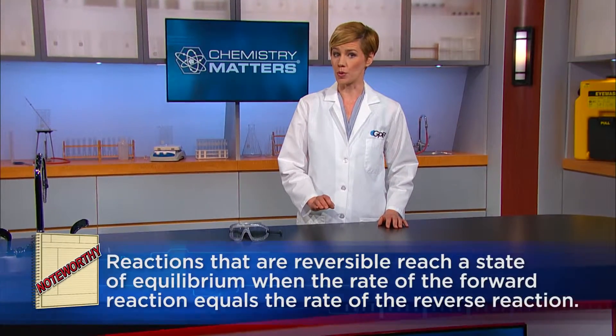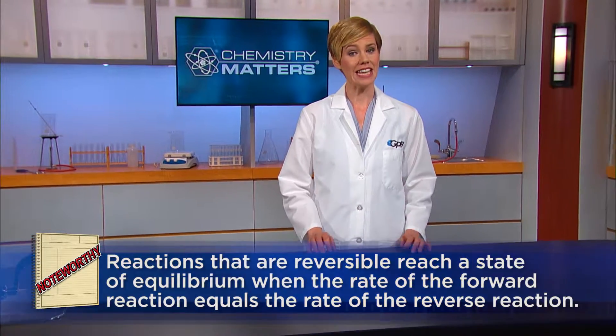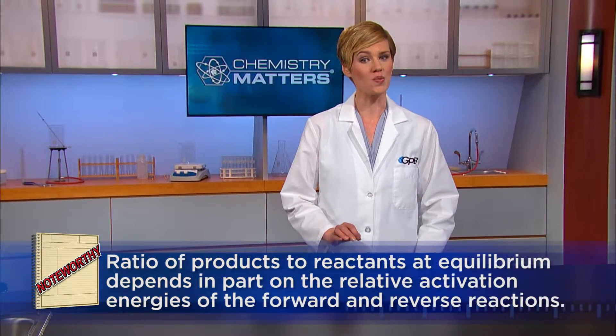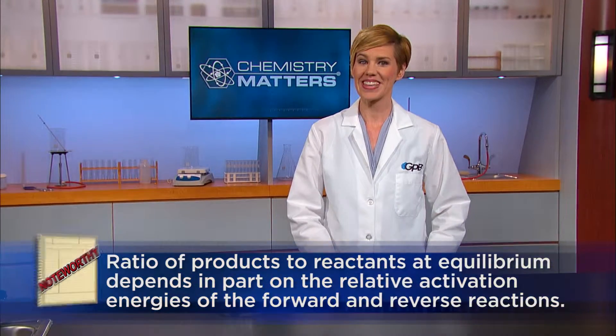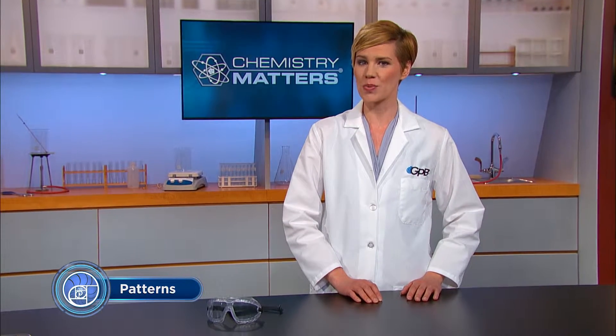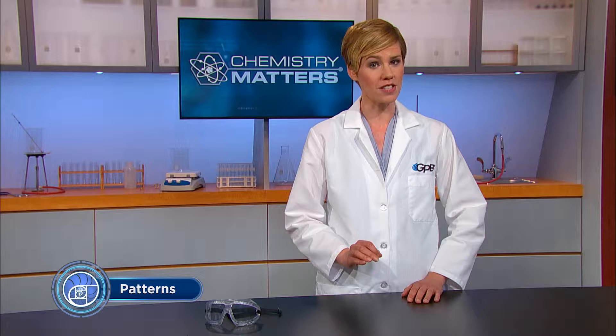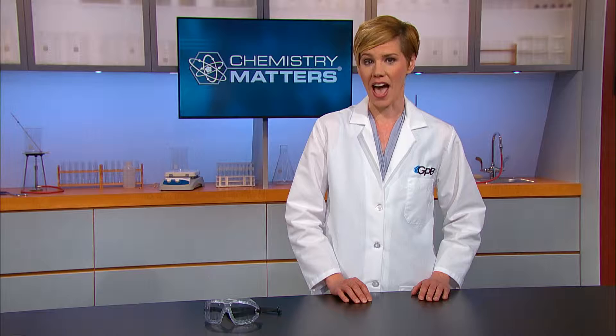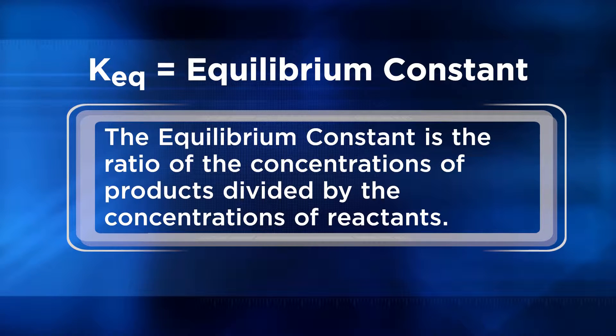Welcome back to Chemistry Matters. In the first video of this playlist, you learned that reversible reactions reach a state of equilibrium when the rate of the forward reaction equals the rate of the reverse reaction. You also learned that the ratio of products to reactants at equilibrium depends in part on the relative activation energies of the forward and reverse reactions. In this video, we'll learn how to calculate that ratio, as well as the specific concentrations of reactants and products under a certain set of conditions. Scientists use a mathematical expression to quantify this ratio — the equilibrium constant, K_EQ — which is the ratio of the concentrations of products divided by the concentrations of reactants.